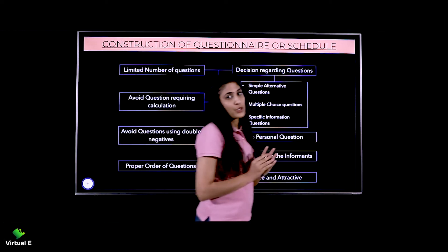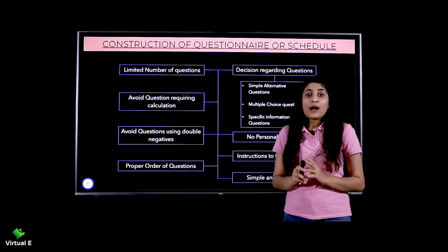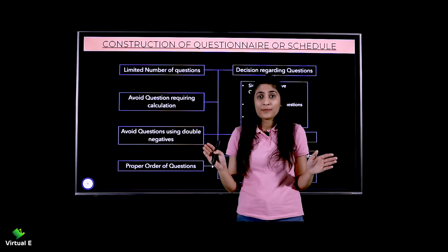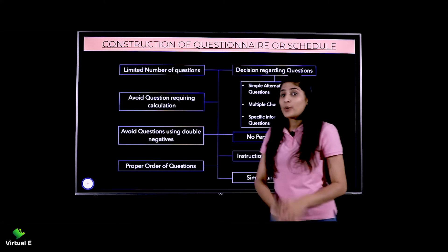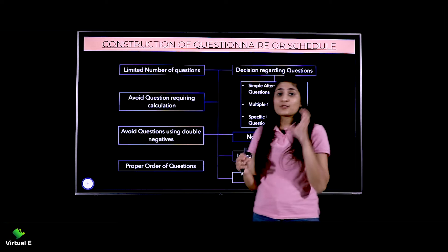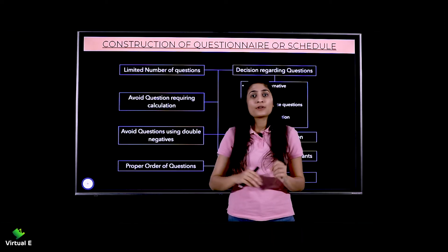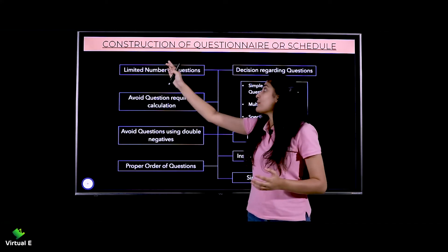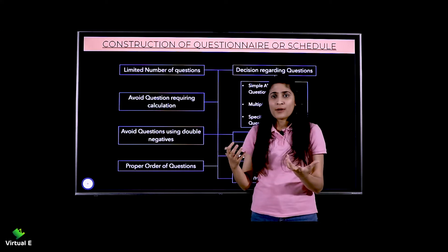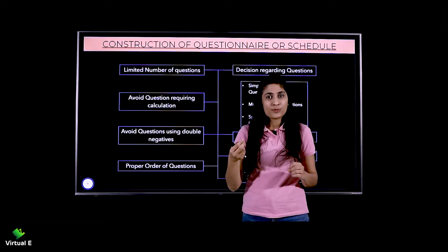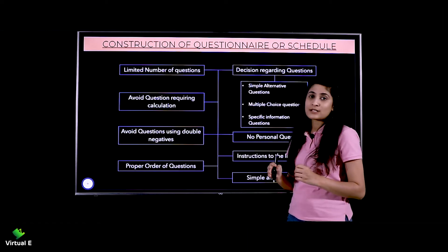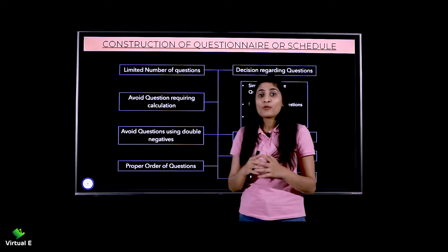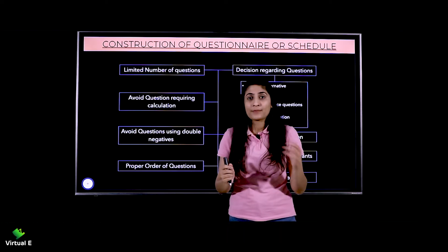The next is limited number of questions. If a person goes in person to collect data, they can ask as many questions as they want. But if you're constructing a questionnaire or schedule, there has to be a limited number of questions. Even in interviews, there's a limit to answering questions. There should be limited questions - maybe eight or ten questions. You can ask up to fifteen simple or alternative questions at most. Don't exceed the limit or your respondent will get bored and may ignore or discard your mail halfway through.